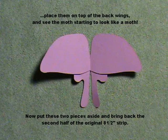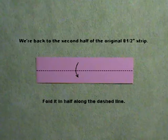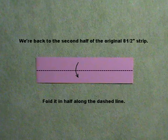Now put these two pieces aside and bring back the second half of the original eight and a half inch strip. We're back to the second half of the original eight and a half inch strip. Fold it in half along the dashed line.